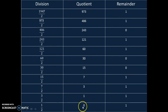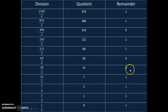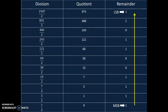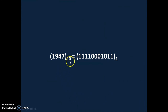Now we have reached our goal — we are getting quotient equal to 0. If you look at the remainder column carefully, we are getting 1s and 0s, and we know that in binary number system there are only two digits: 1 and 0. The LSB is the first remainder and the MSB is the last. So our final answer is 1947 base 10 equals 11110011011 base 2.